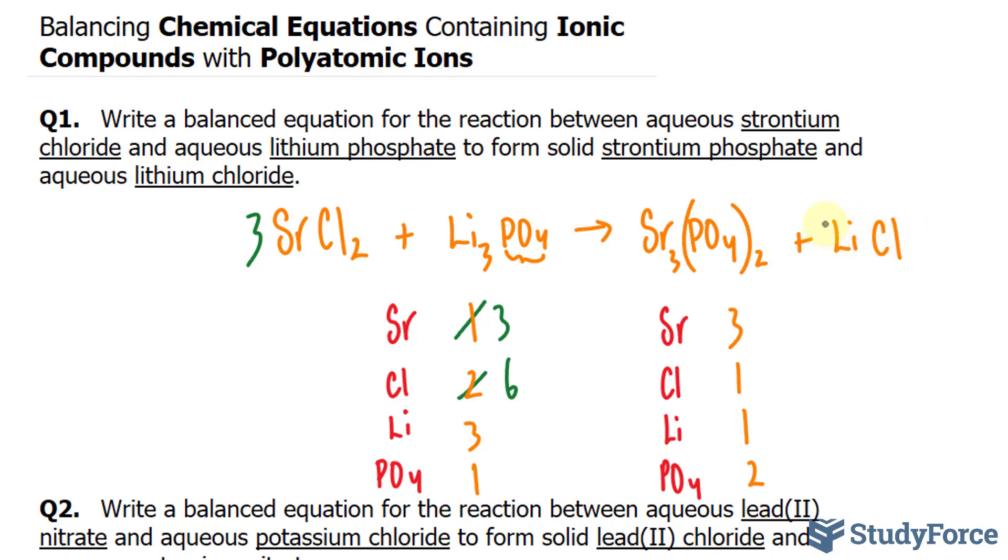Let me put a 6 in front of lithium chloride. This ends up giving me 6 lithiums, 6 chlorines. And now we have the strontiums and the chlorides balanced.